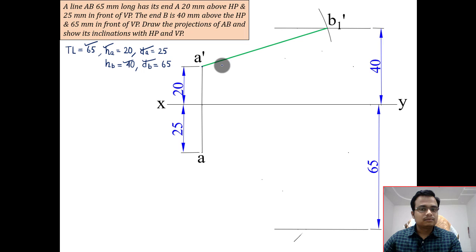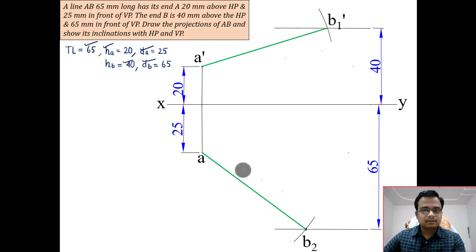This is the true length. In the same manner, with A as the center and again with 65 as the radius, cut an arc. This is true length above XY, this is true length below XY. This angle will be theta, this angle will be phi.